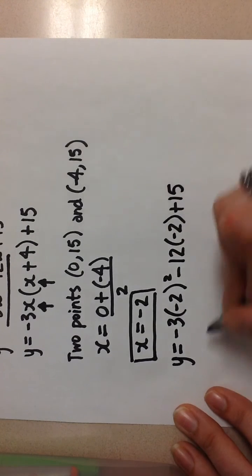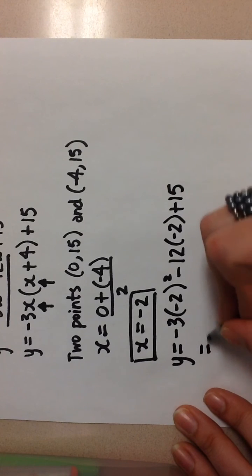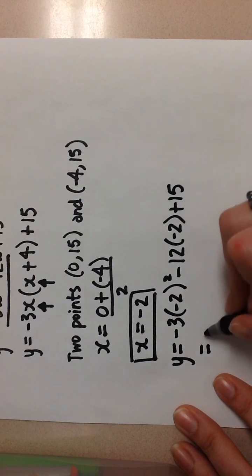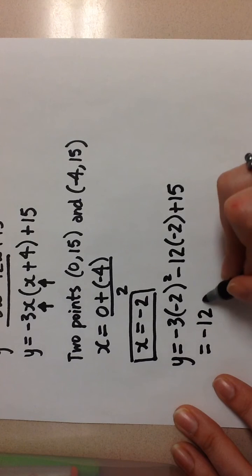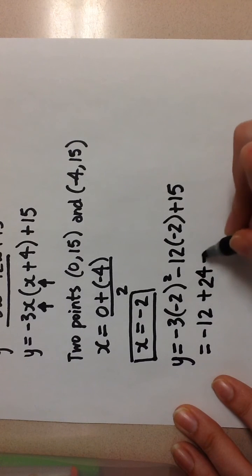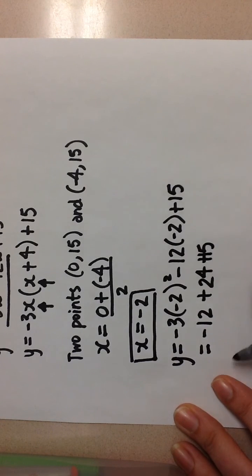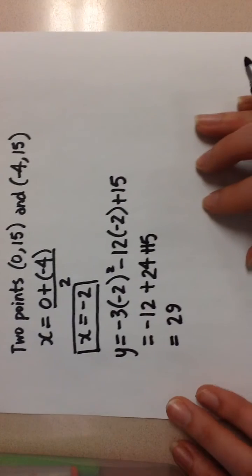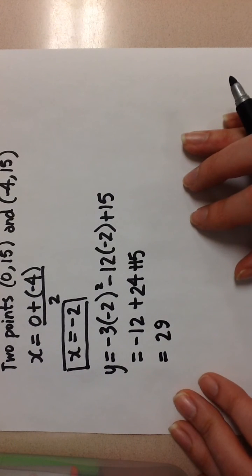I will solve for the value of y. Here I get -12 + 24 + 15, which gives me 29 for the optimum value at the vertex.